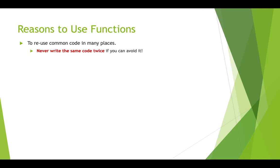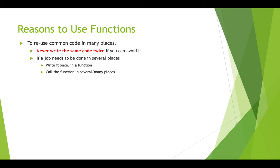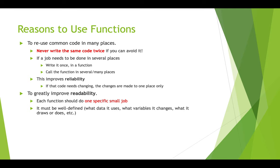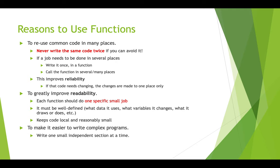Why would we want to use functions? The most important reason is we don't want to write the same code over and over — that's inefficient and you don't want to make changes in multiple places. Write it once, put it in a function, and call that function whenever you need it. This makes code more reliable: if you need to change that code, you change it in one place, not seven. It also makes your code more readable, as long as you give your functions descriptive names. Functions should be small and do one specific job, which makes it easier to write complex programs by breaking big problems down into small pieces.